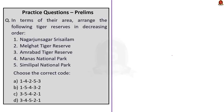The question asks to arrange tiger reserves in decreasing order of area. Using the mnemonic 'Naughty man melts silicon absurdly' — Nagarjuna Sagar, Manas, Melghat, Similipal, Amrabad — the correct order is 1, 4, 2, 5, 3. The correct answer is option A. You should know the location of important tiger reserves from the map.